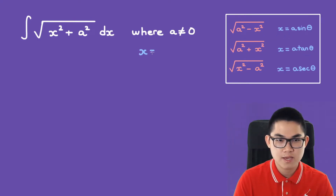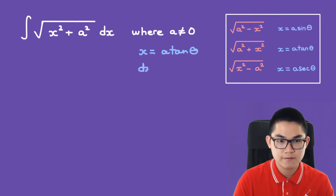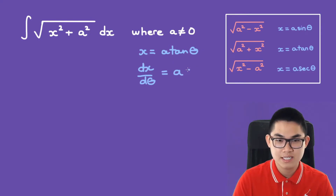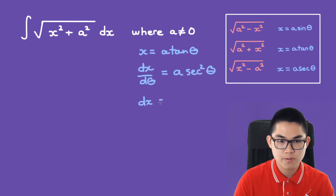x will be equal to a times tan. And what is the derivative? It's going to be a times the derivative of tan, which is secant squared. So dx will be a times secant squared times d theta.